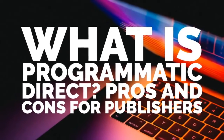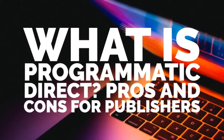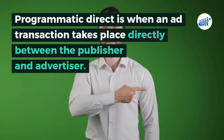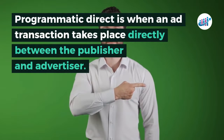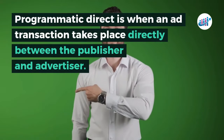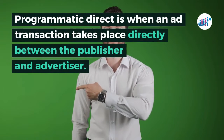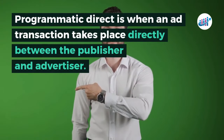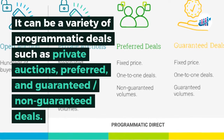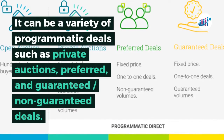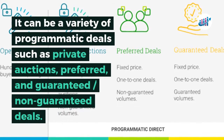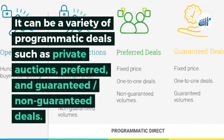What is Programmatic Direct? Programmatic Direct is when an ad transaction takes place directly between the publisher and advertiser. It can be a variety of programmatic deals, such as private auctions, preferred, and guaranteed or non-guaranteed deals.